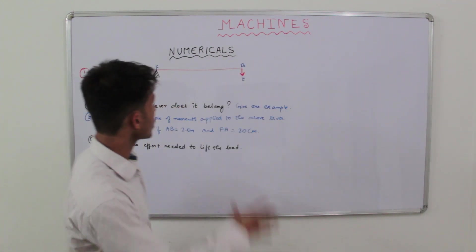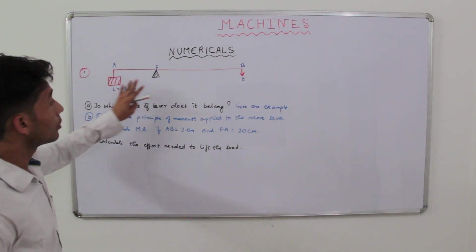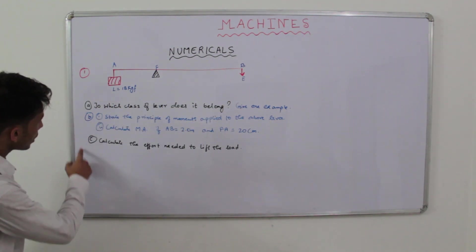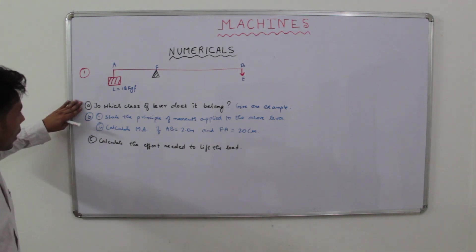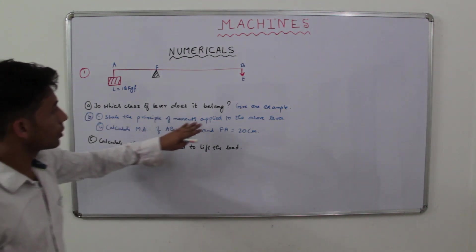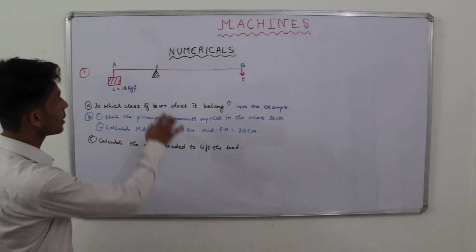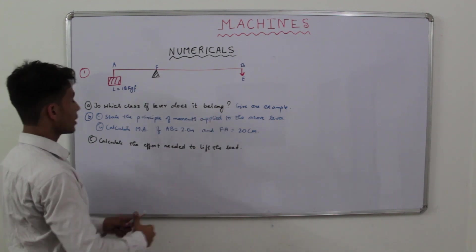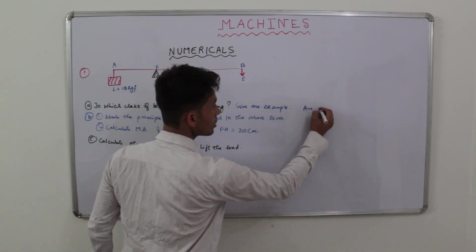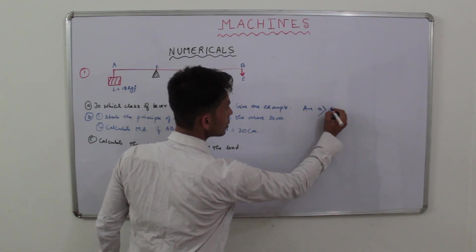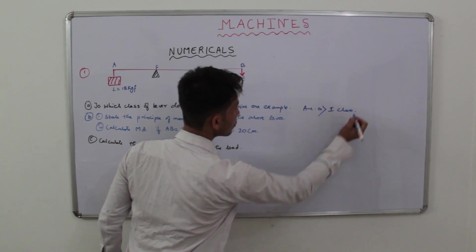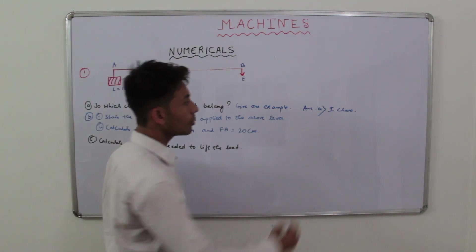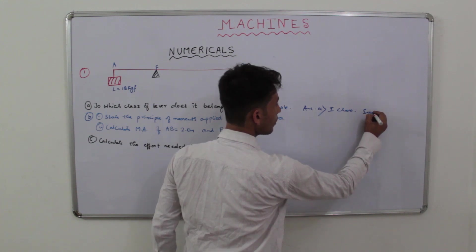The first numerical: we have a lever. The first part asks to which class of lever does it belong. We can see that the fulcrum point lies in between the load and effort, so it is a first class lever. The answer to part (a) is first class. For an example, you can give a seesaw or a crowbar.